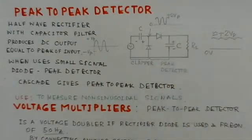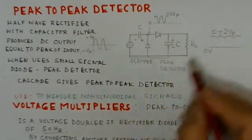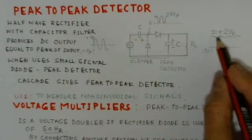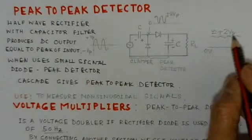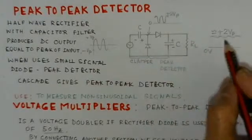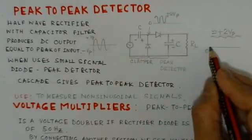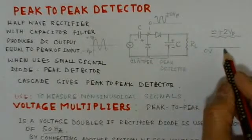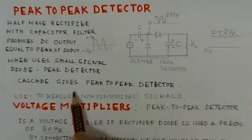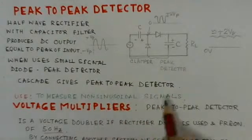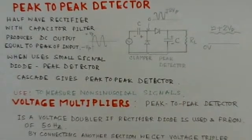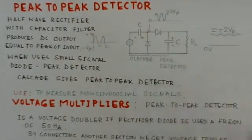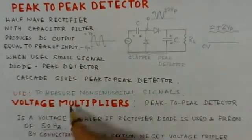Which is having a peak of twice Vp, that twice of the peak value of the input, and the reference level is 0 volts. So this cascade gives me peak to peak detector. So this is one of the very important circuits and this circuit could find applications.